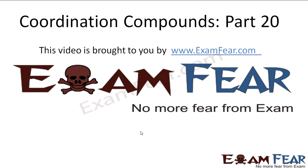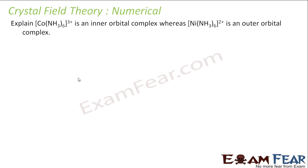Hello friends, this video on coordination compound part 20 is brought to you by examfear.com. We have to explain why Co(NH3)6^3+ is an inner orbital complex, whereas Ni(NH3)6^2+ is an outer orbital complex. You see the ligands are strong field ligands.